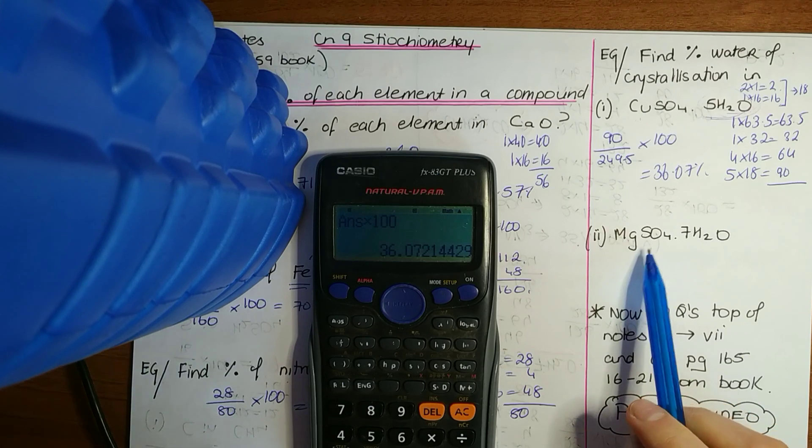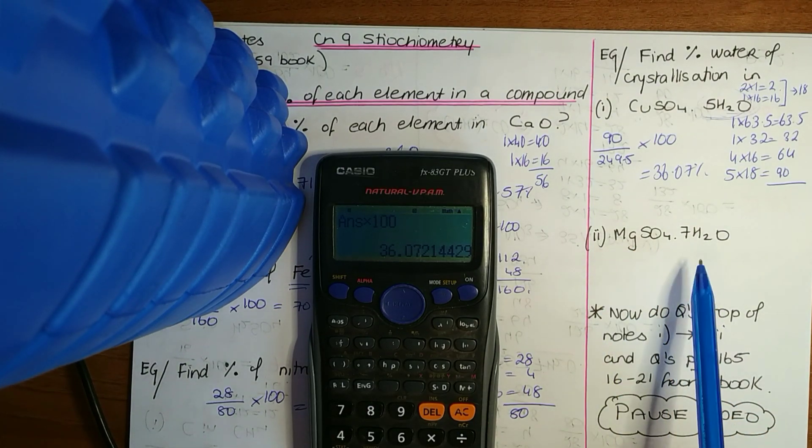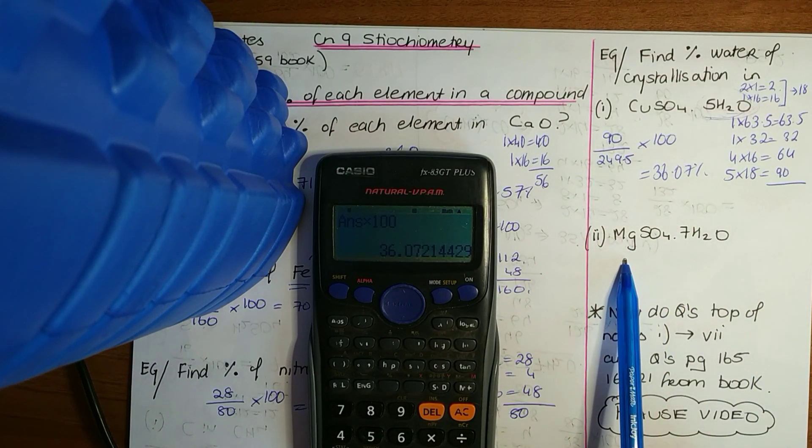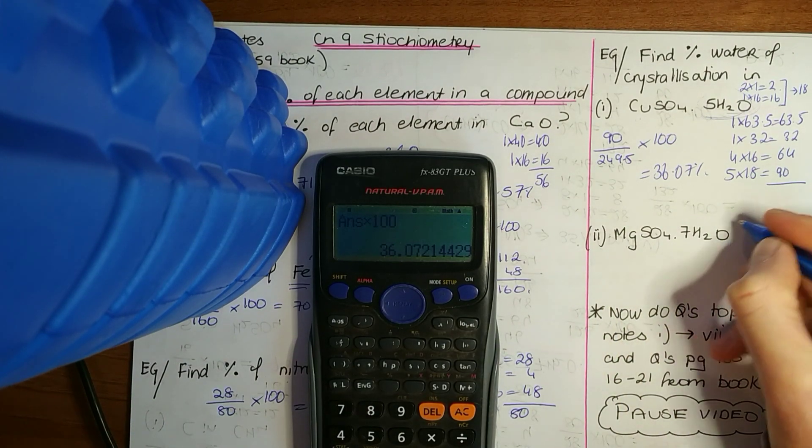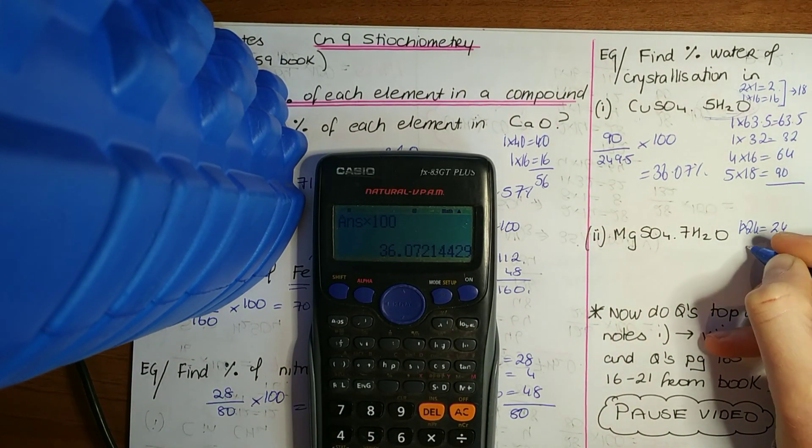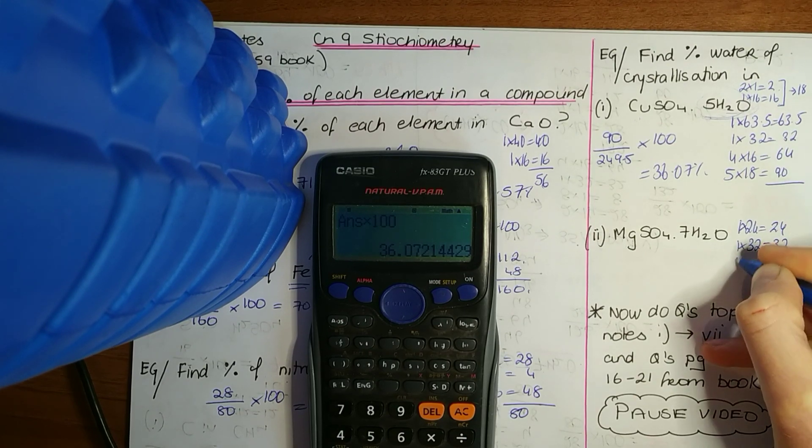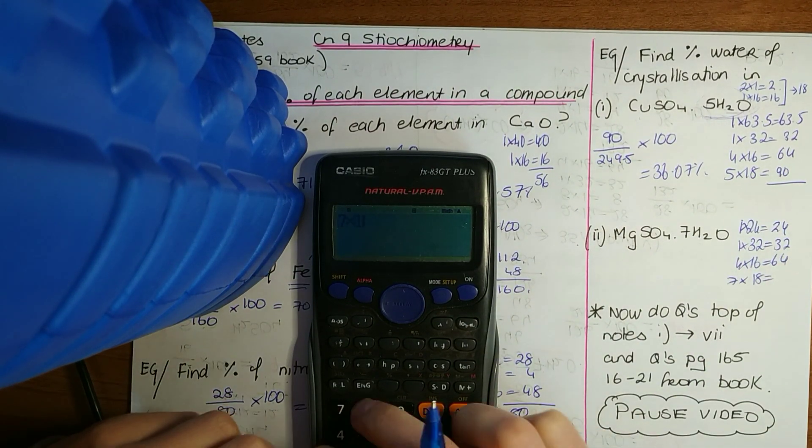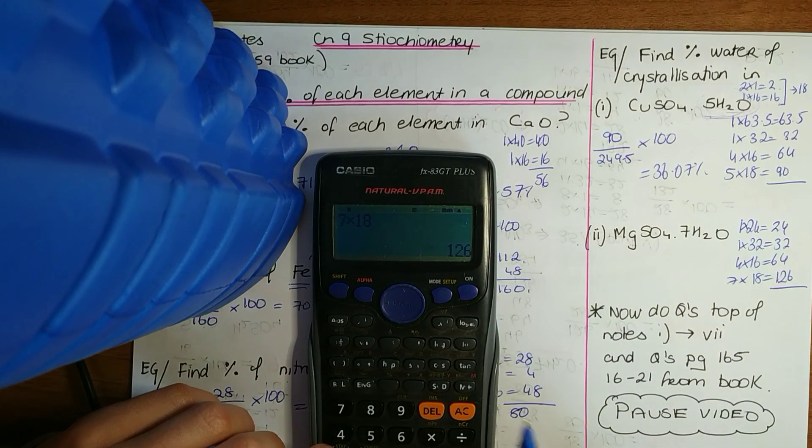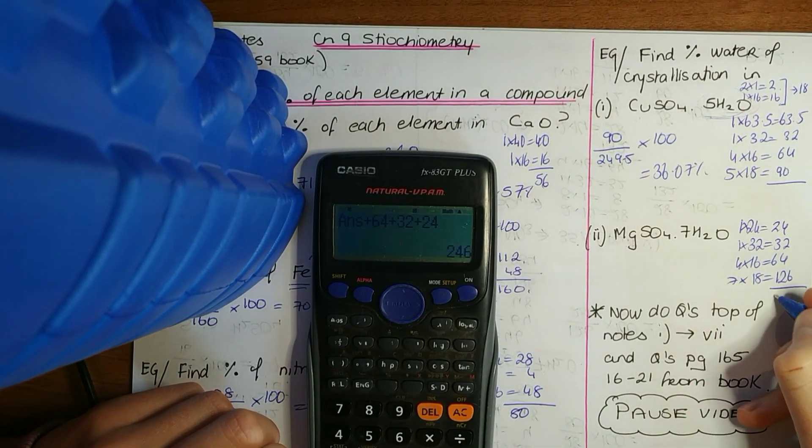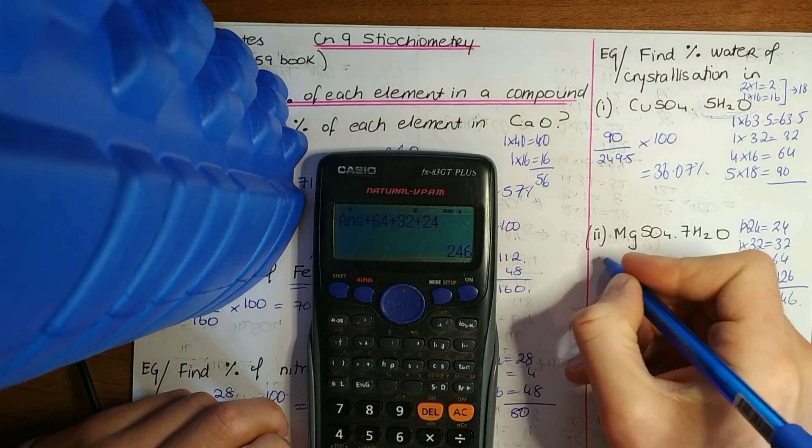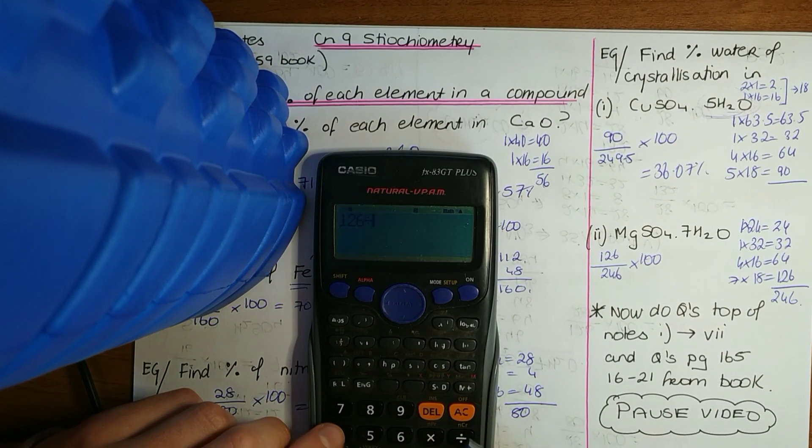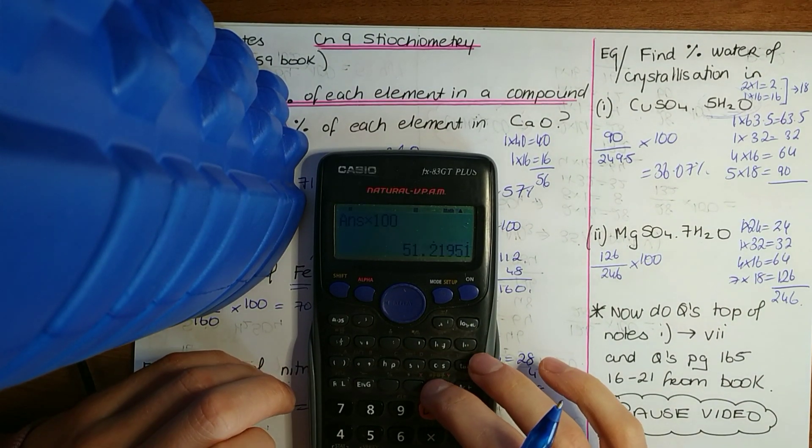Next one here you've got MgSO₄·7H₂O. Same thing. Many times pause if you want to now, pause it and try this yourself if you're feeling confident. So magnesium 1 by 24 is 24. You'll get a lot more benefit from it. And again 7 by 18, we know our water is. Now tally it all up: 246. And then the amount of water in it, 126 over 246 times that by 100: 51.22.